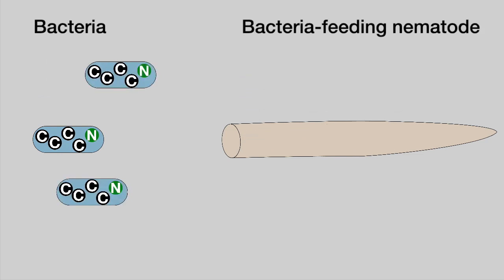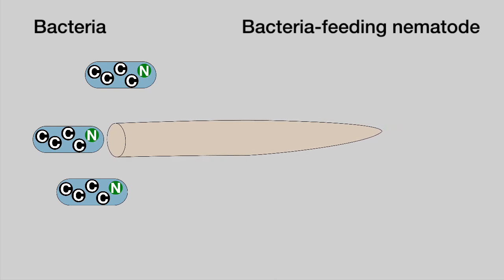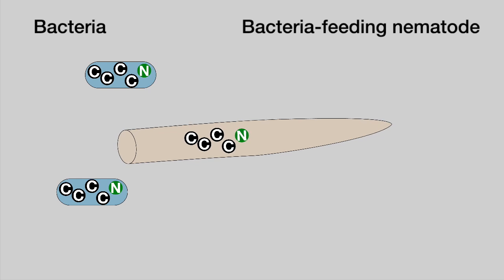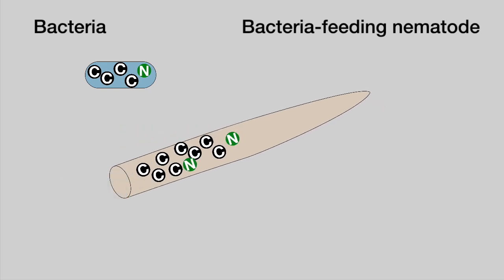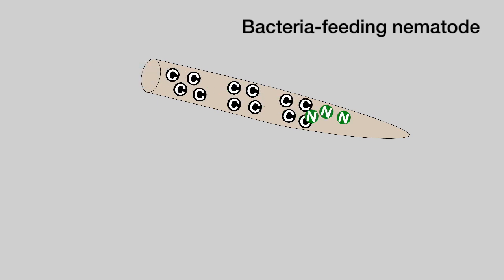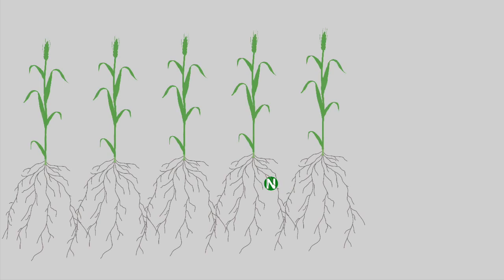For example, if this nematode consumes 3 bacteria, it obtains 12 carbon units from its bacterial food. It also gets 3 units of nitrogen, which is more nitrogen than it needs. As a result, the excess nitrogen is excreted from the nematode into the surrounding soil environment, in a form that is directly available for uptake by plant roots and other soil microorganisms.